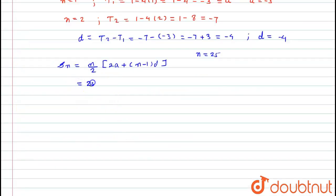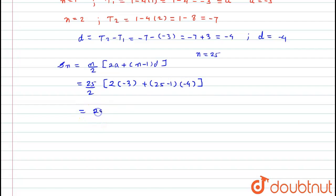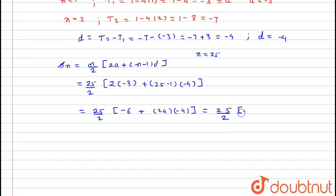Substituting the values: S(25) equals 25 divided by 2, in bracket: twice of a — I have calculated that is minus 3 — plus (25 minus 1) into d — I have calculated that is minus 4. Solving this: 25 divided by 2, bracket 2 times minus 3 gives minus 6, and 24 times minus 4 gives minus 96.